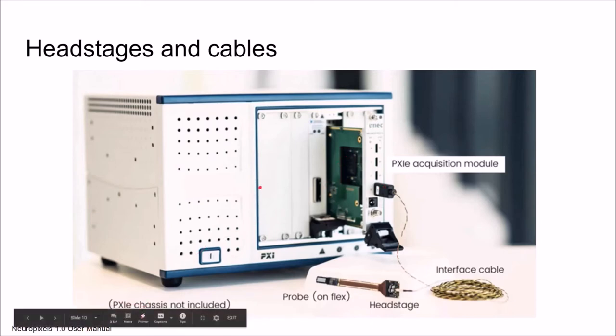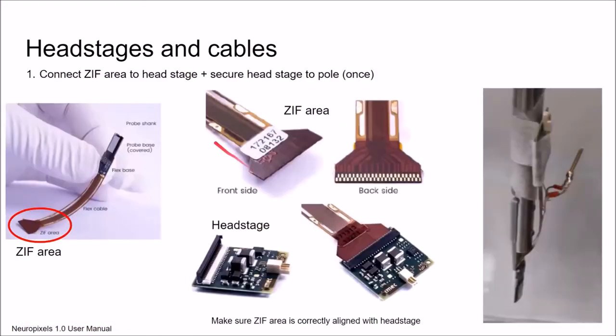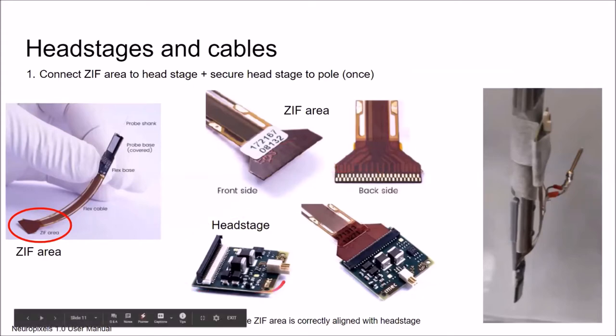Now we can connect everything. We have talked about the probe, which needs to be connected to the headstage, which needs to be connected to this interface cable, which then goes to the acquisition module, which sits in this chassis. The first step is you want to connect this ZIF area, which you can see here, to the headstage. Here is a zoom into this ZIF area. It has a front side and a back side. You need to be sure which is which. This is the headstage and you want to slide the ZIF area in the right direction into this headstage. This black part needs to be open. You slide in the ZIF area like so and then you can close the black part so it's fixed.